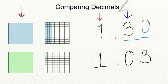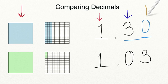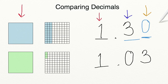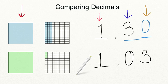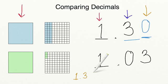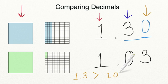Now, if we were comparing these numbers and we still had the same number in the tenths place, we would just move over to the next place value to the right and continue on until we found a number that was less than, greater than, or equal to another. When we write this out to compare one and three tenths to one and three hundredths, we rewrite it as: one and three tenths is greater than one and three hundredths.